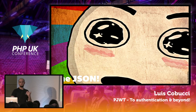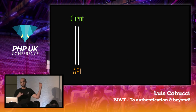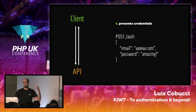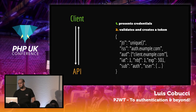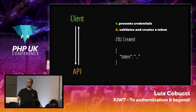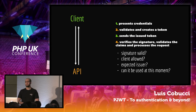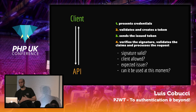The most common use case is about authorization and authentication. You have two sides: the client and an API. The client basically presents the credentials. The API validates the credentials — this is an example of the JSON object you can use. The API sends the token back, and for the next request the token will be passed as an authorization header. The API will be able to say: is the signature valid? Is this client allowed to use this token? Who issued this token? And can this token be used at this moment?